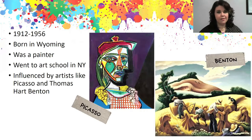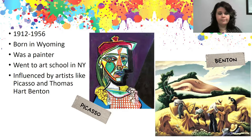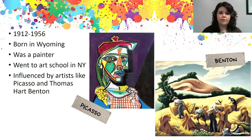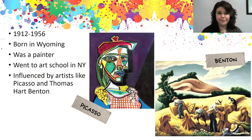Jackson Pollock was born in 1912 in Wyoming. He was an American artist who died in 1956, so definitely what we would consider a modern artist. He was a painter, so paint was his medium. Medium is just a fancy word for what you create with — so if you're a drawer, your medium is pencils; if you're a painter, your medium is paint.